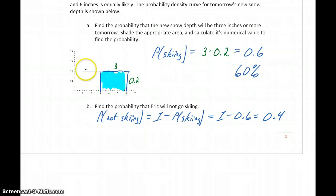The other way would be to look back at this probability density curve again. He won't go skiing if it snows between 1 and 3 inches, so up to but not quite including 3 inches. Meaning this area under the curve represents the probability that he won't go skiing. So we still have a height of 0.2 and in this case a width of 2. So we could also calculate this as 0.2 times 2 to get 0.4 or 40%.